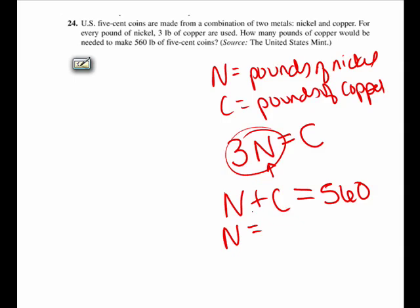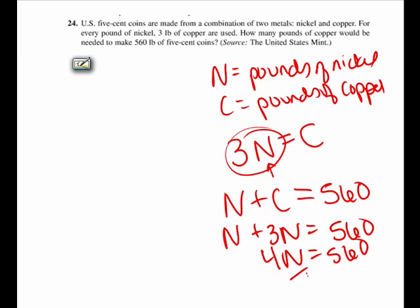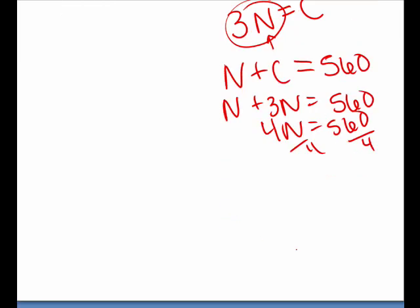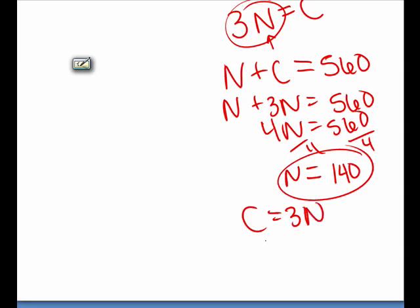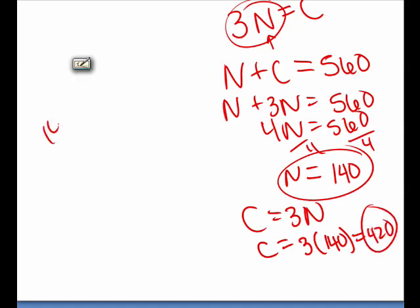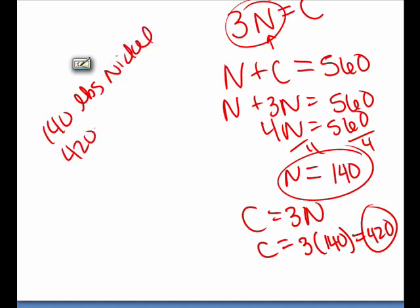They also tell us the total amount added together comes to 560 pounds, so N plus C equals 560. We replace C with 3N, giving N plus 3N equals 560, so 4N equals 560. Dividing by 4, N equals 140. Since C equals 3N, C equals 3 times 140, which is 420. So 140 pounds of nickel and 420 pounds of copper.